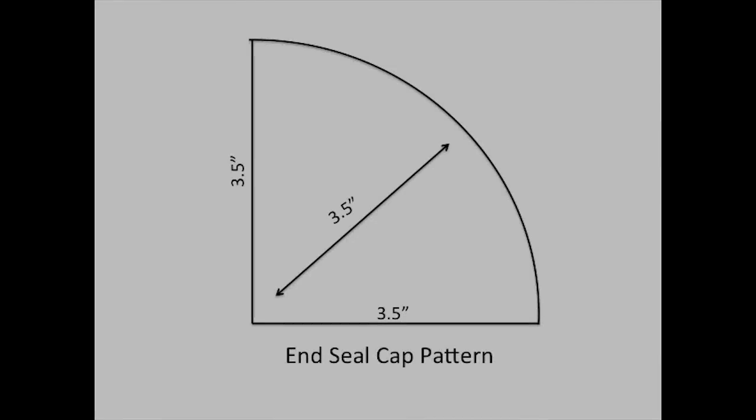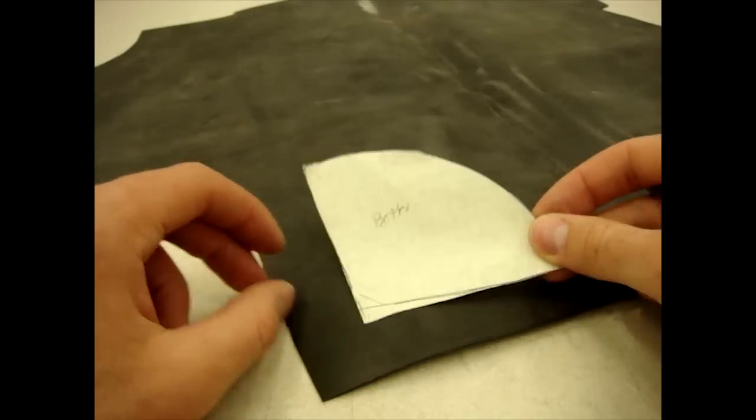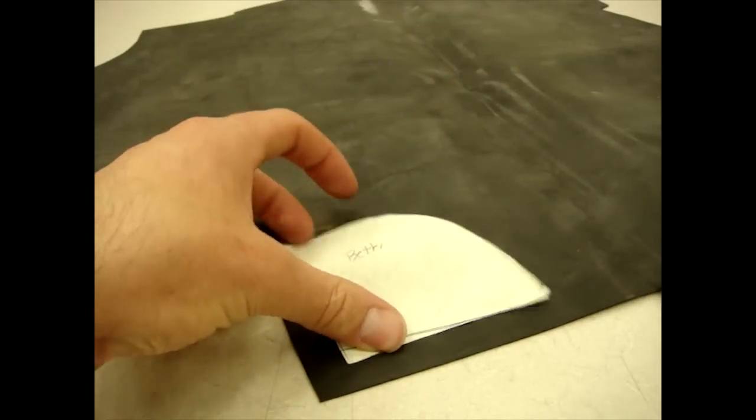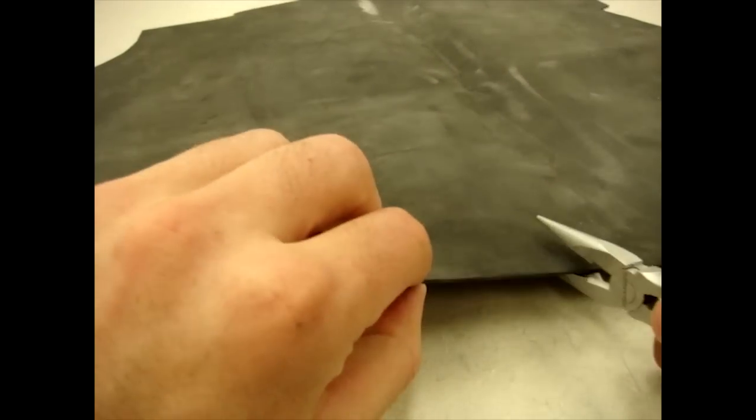To make the rubber ends, what you will want to do is take these dimensions that you see on the screen and draw them and cut them out on a piece of paper. Then take the paper, put it on the rubber, and trace out on the rubber, followed by cutting the rubber with a pair of scissors.